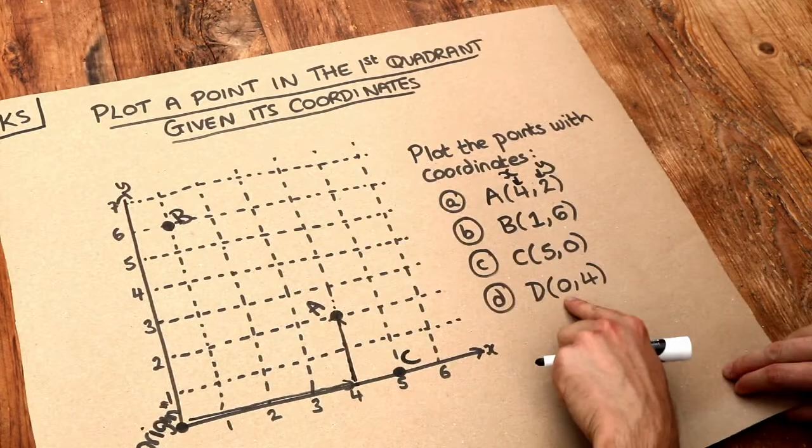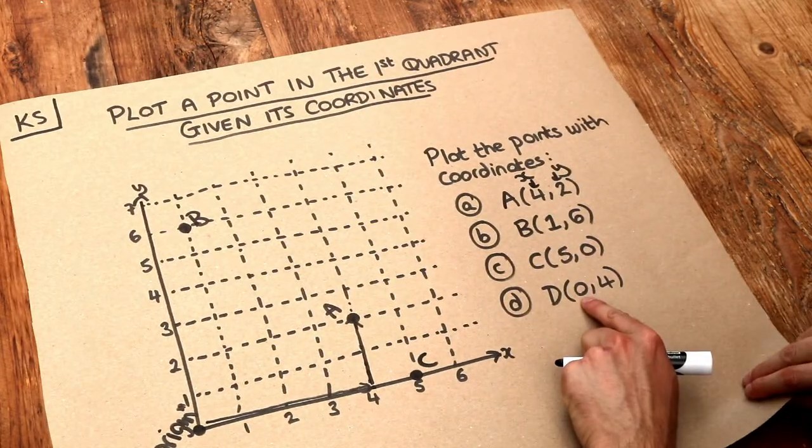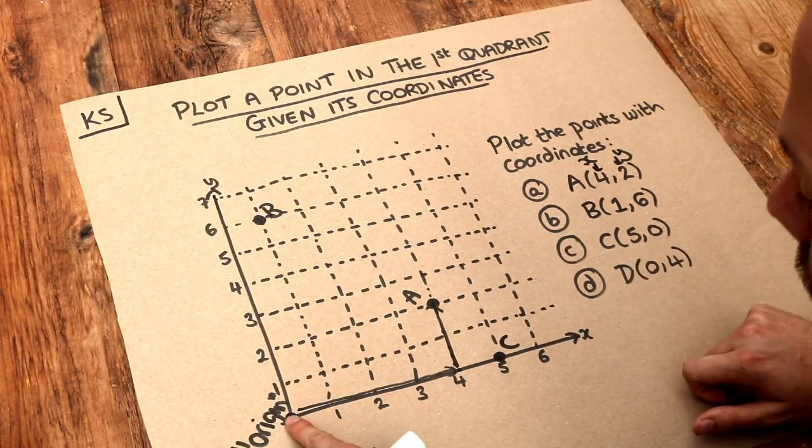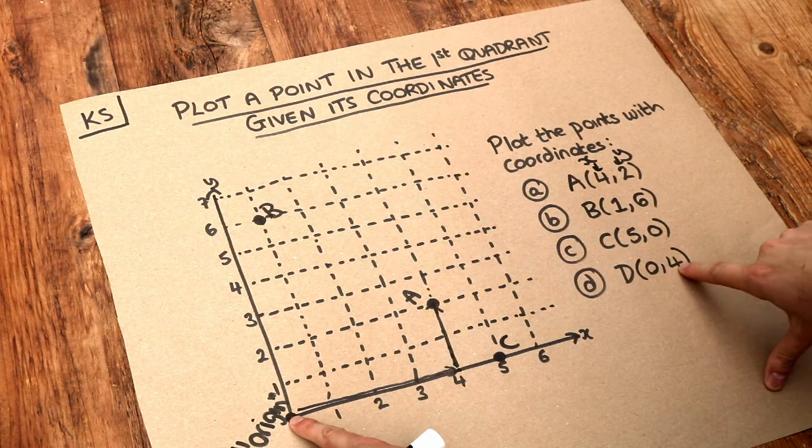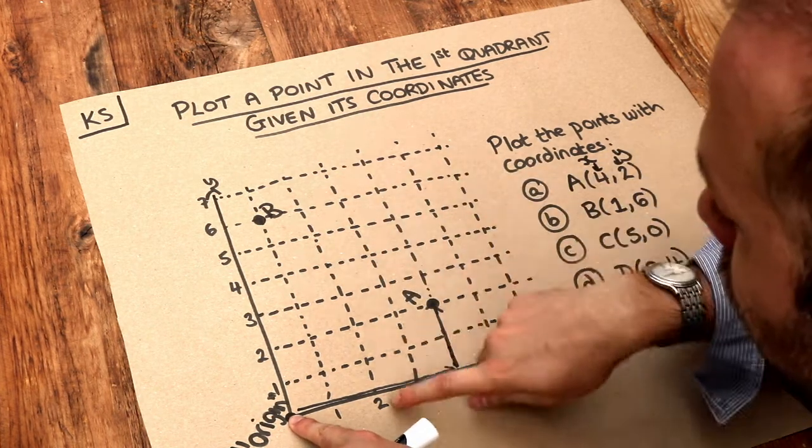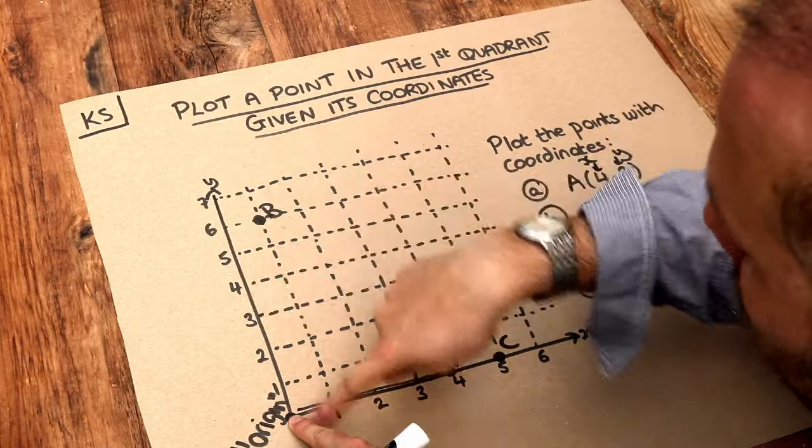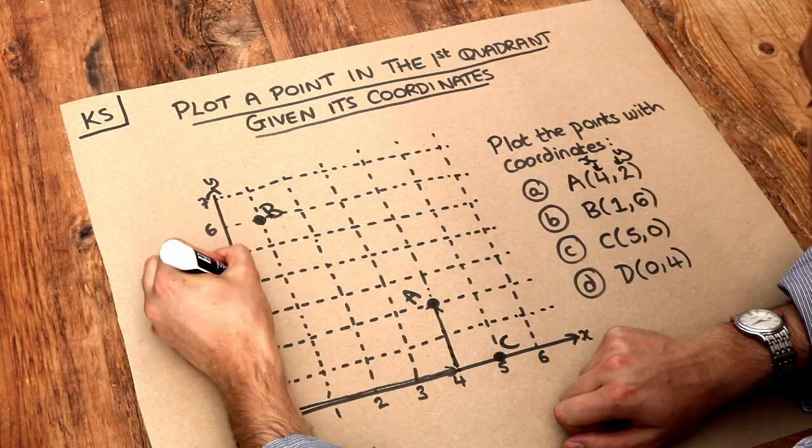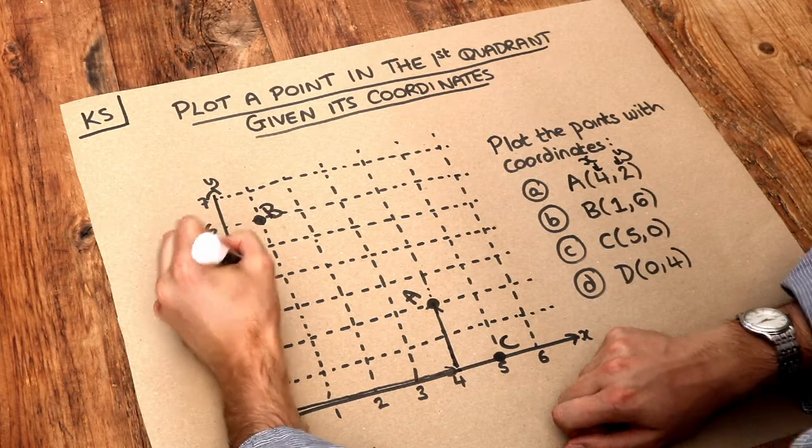And then finally, D (0,4). The 0 there tells us we don't move at all in the x direction - we don't move left or right, so we stay at the origin. And then this y value of 4 says we have to move 4 in the y direction, the vertical up-down direction. So we move up 4, and we end up here, and that is point D.